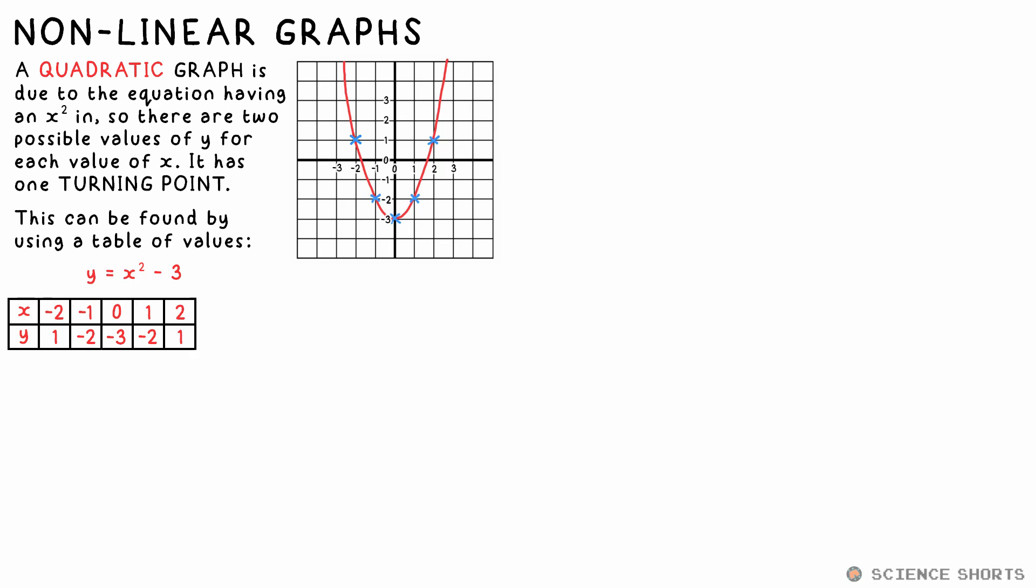Quadratic graphs always have one turning point at the lowest or highest point if it's inverted. Sometimes the turning point won't be at an integer value for x, it could be between two integers. If you're higher, you might have to plot the points by using a table of values that you've calculated, then sketch the curve and you can see where the turning point is or what two numbers it's between anyway.